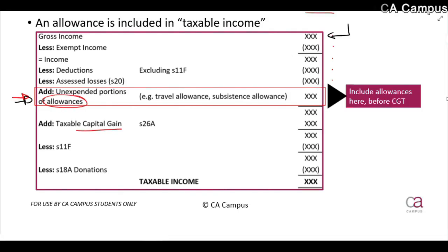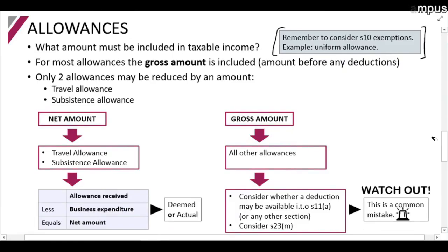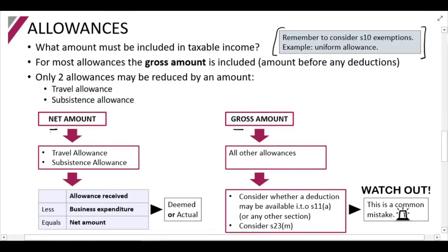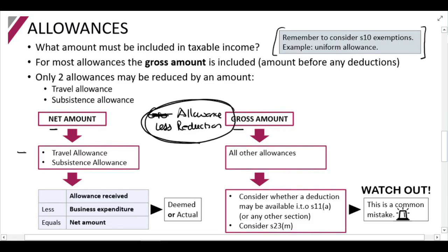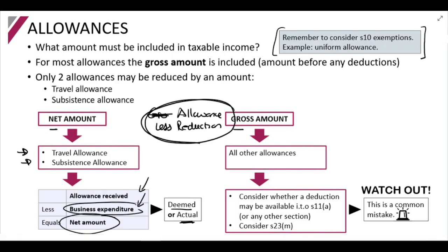For all other allowances, you will either include the gross amount or the net amount in taxable income. The net amount is the allowance less some reduction for business use. The only allowances where you are permitted to do this are a travel allowance and a subsistence allowance, calculated as the allowance less business expenditure - either actual or deemed business expenditure. We will discuss this in more detail shortly.